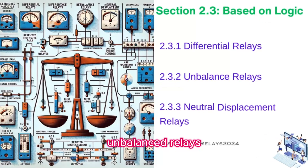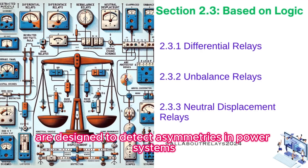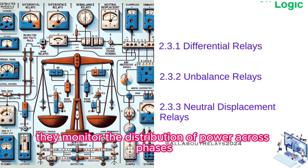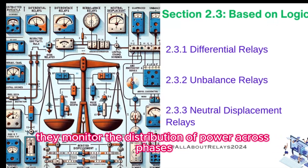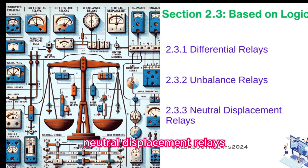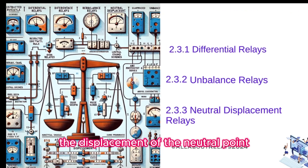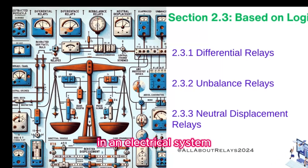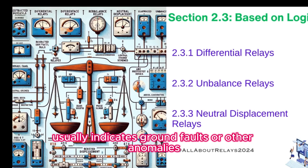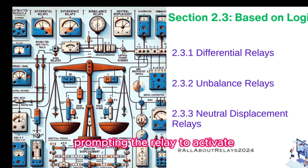Unbalance relays are designed to detect asymmetries in power systems, such as unbalanced loads or phase loss conditions. They monitor the distribution of power across phases and initiate protective actions if an imbalance is detected. Neutral displacement relays monitor the displacement of the neutral point in an electrical system. A significant shift from the normal position usually indicates ground faults or other anomalies, prompting the relay to activate.